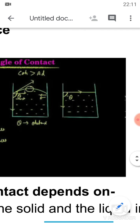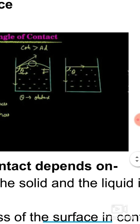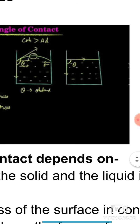Plane meniscus में forces equal होती हैं, angle = 90°, liquid partially wets the solid. Example: pure water in glass shows angle of contact = 90°. Normal water in glass shows concave meniscus।